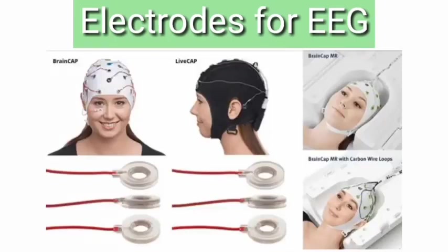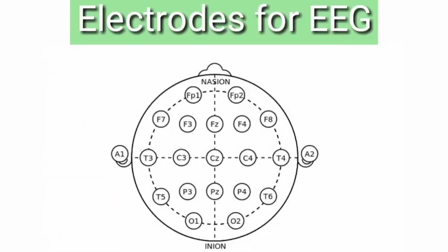EEG is recorded using electrodes that we place on the scalp. EEG electrodes are placed universally by the 10-20 rule system. We take the distance from the nasion — the depression of the nasal area — to the inion, the prominent part of the occiput. From this distance, we take 10 to 20 percent and place electrodes at that gap evenly throughout the scalp. We name the electrodes using an alphabet and then a numerical number.